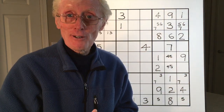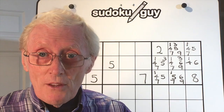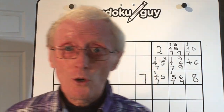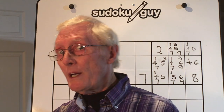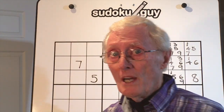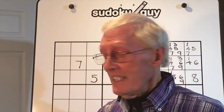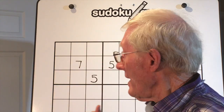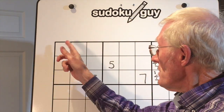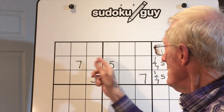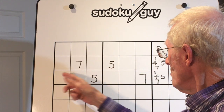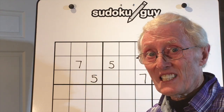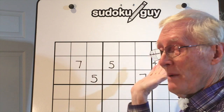Hello, here we are. This is the final part of this particular tutorial and what I want to do is show you something really neat. This was a very difficult puzzle — it used to have all the little possible numbers in here, but to make it easy to understand, I've rubbed them out.